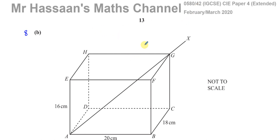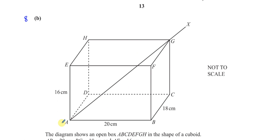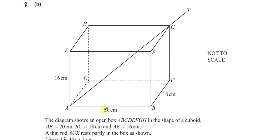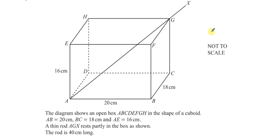This question is about three-dimensional trigonometry. The diagram shows an open box ABCDEFGH in the shape of a cuboid, so all the faces are rectangles. AB is 20 centimeters, BC is 18 centimeters, and AE is 16 centimeters. There's a thin rod AGX which rests partly inside the box, with the rod being 40 centimeters long — so the length from A to X is 40 centimeters.